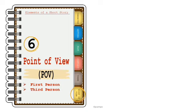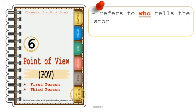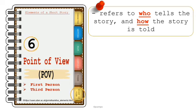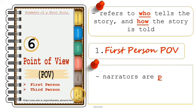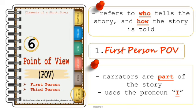The last element of a short story is point of view, or POV. It refers to who tells the story and how the story is told — you may ask who is the narrator or speaker in the story. If the narrator is telling the story from a first-person point of view, then they are part of the story and are telling it the way they see it. First-person narrators use the pronoun 'I'.